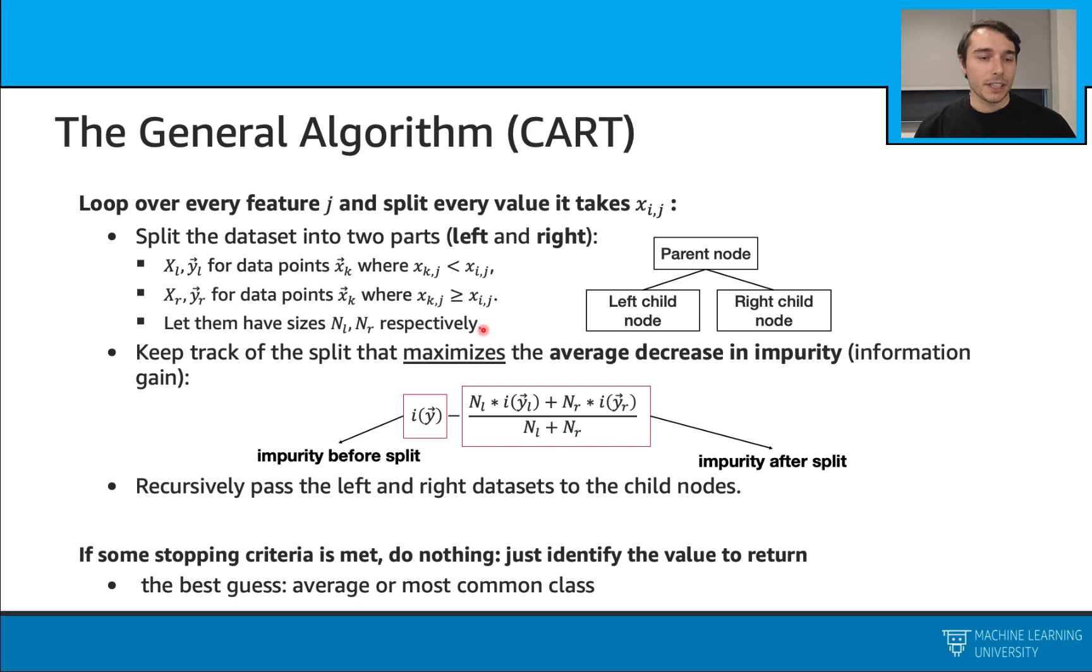Then we will keep track of the split that maximizes our average decrease in impurity, or that maximizes the information gain. Let's take a look at that. We calculate that with the impurity before the split minus impurity after the split. Impurity before the split is simply the impurity at the parent node. And the impurity after the split is the weighted sum of the impurities on the left and right child nodes. And we will be looking for the split that maximizes this value. Then we will recursively pass the left and right datasets to these child nodes, and the process just goes on.